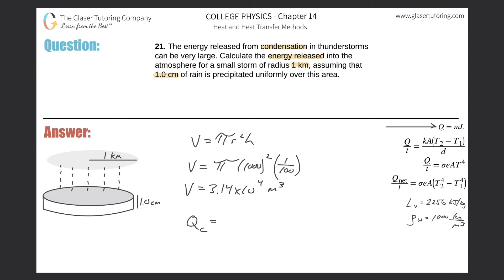It's going to equal the mass that has been condensed, multiplied by the latent heat of vaporization. Remember, the latent heat of vaporization works both ways - from liquid to gas and gas to liquid.